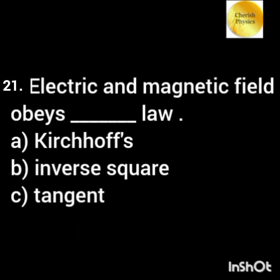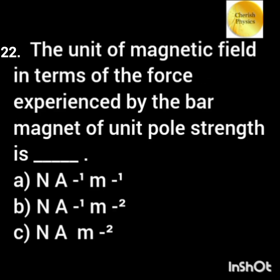The electric and magnetic field obeys dash law. The unit of magnetic field in terms of a force experienced by the bar magnet of unit pole strength is dash.